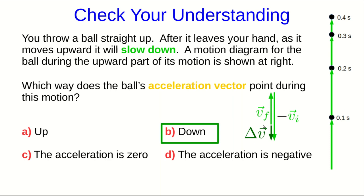If you answered up, you may simply be confusing velocity with acceleration. The velocity tells you which way the object is going, and this object is certainly going up, but the acceleration is all about how the velocity is changing, and it turns out to be down.